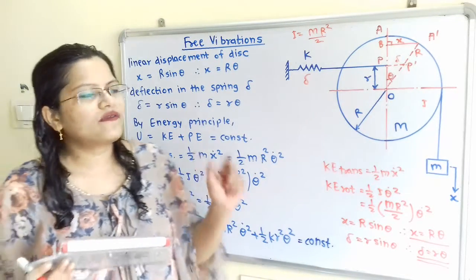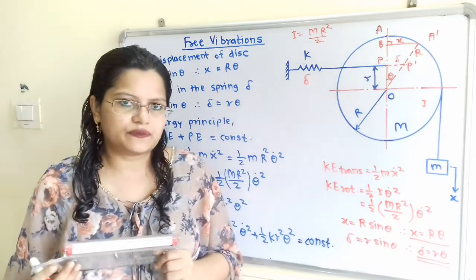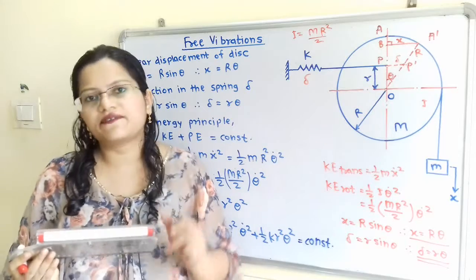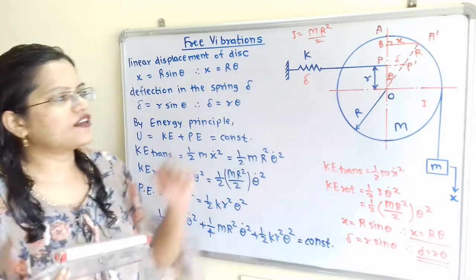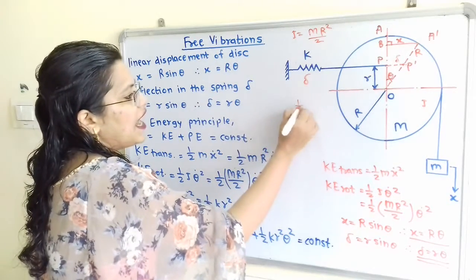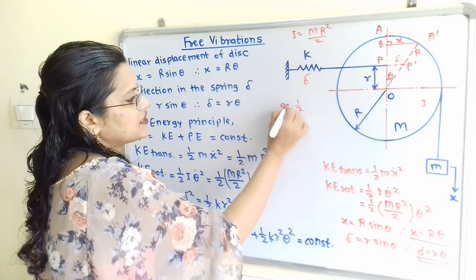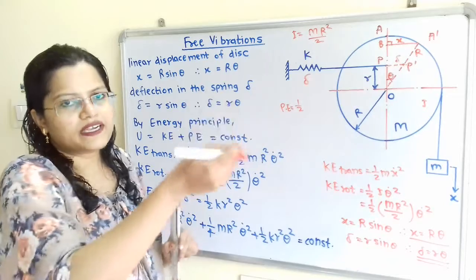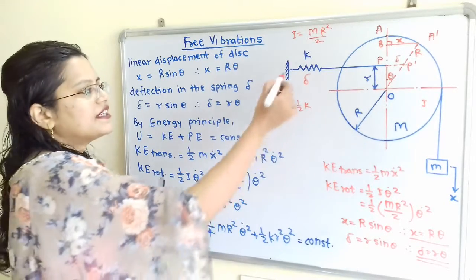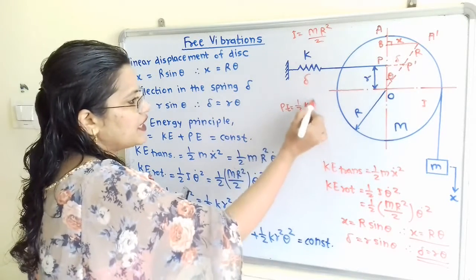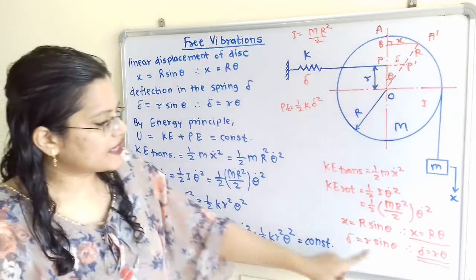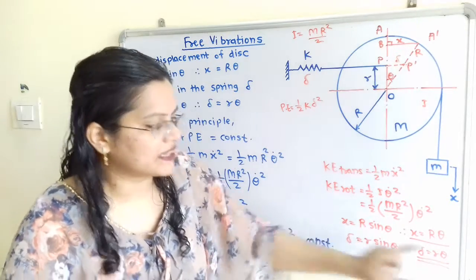Now we move to the potential energy. The potential energy in this system is due to the spring with stiffness K. The formula for potential energy in a spring is half·K·δ², where delta is the deflection. Instead of delta we substitute the value r·θ, giving PE = half·K·(r·θ)² = half·K·r²·θ².